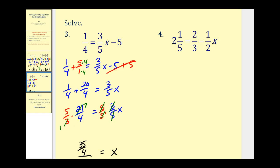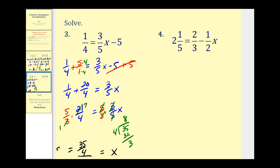Let's go ahead and practice converting 35/4 to a mixed number. 35 divided by 4 goes in 8 times with a remainder of 3. So 35/4 is equivalent to 8 and 3/4.